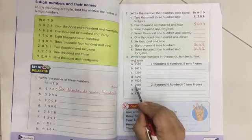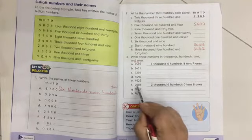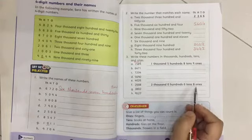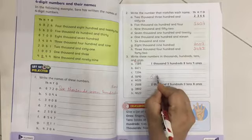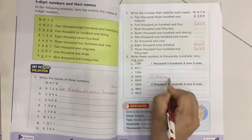You can see here. 2,000, 0, 100, 0, 10, and 8 ones. 5,000, TH, O, U, S, A, N, D. 5,000.